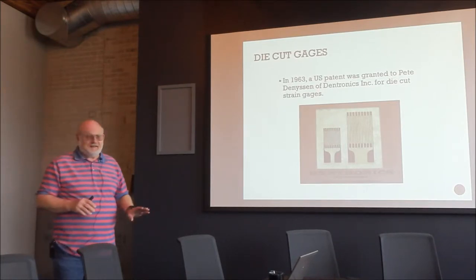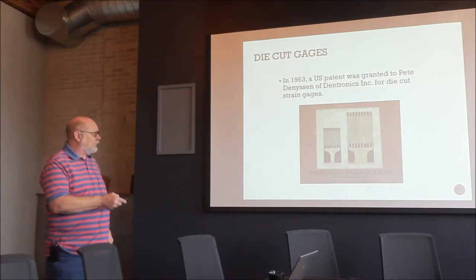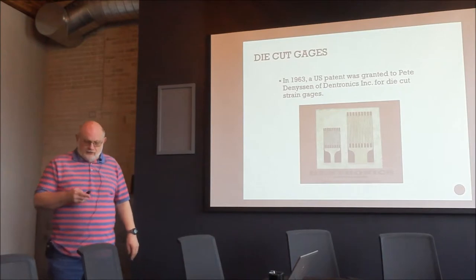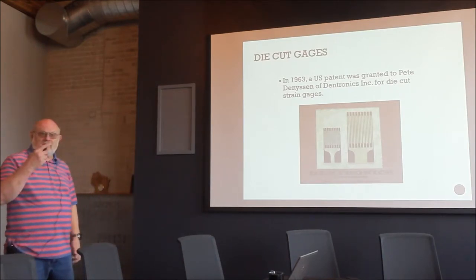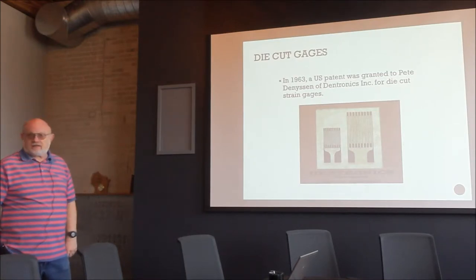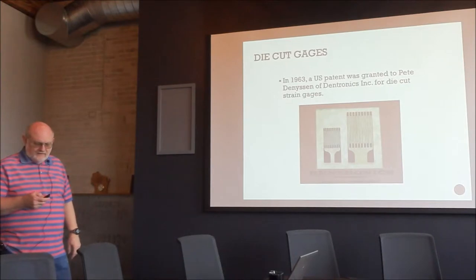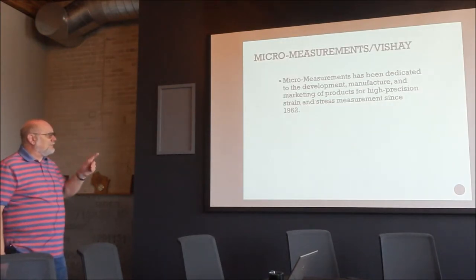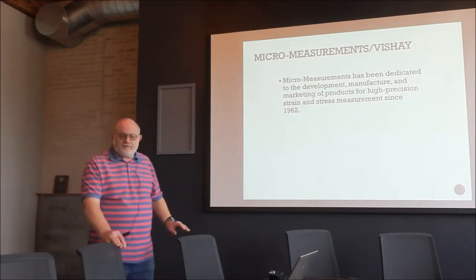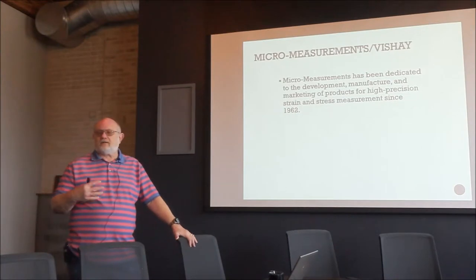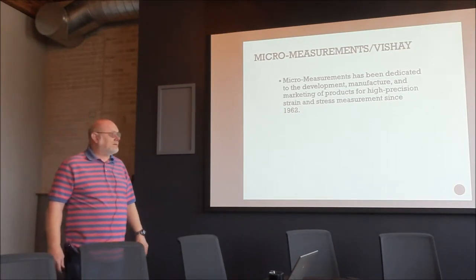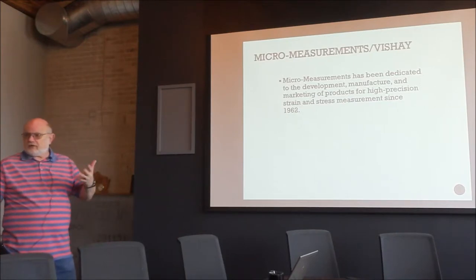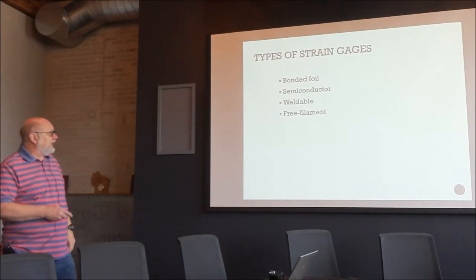In 1963, Dentronics came up with a way to die-cut the gauge — remarkable when you consider these elements are about a quarter-inch long with an eighth-inch active gauge length. When doing beryllium strain gauges for nuclear work, Dentronics did the die-cutting. Micro-Measurements, formed in 1962, pioneered photo-etched gauges as the age of electronics and photo-etching matured. They've since been acquired but their gauges are what we use today.